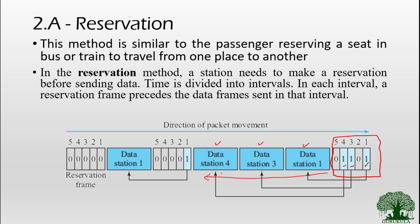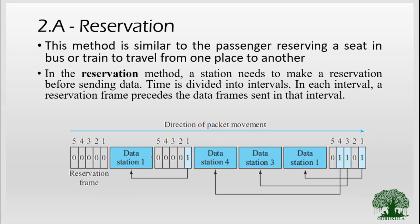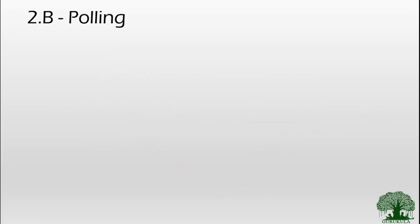As you can see, station 1, station 3, and station 4 are sending their frames in their respective time slots. When the second time slot begins, only station 1 has reserved a slot, so only station 1 is allowed to send the frame. This type of access mechanism is what we call the reservation type of access mechanism. The second method of access mechanism is called polling.